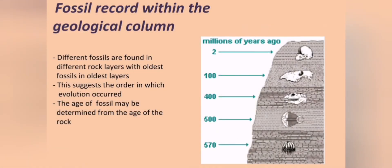If you take a plastic bottle, fill it up with some soil, pour some water into the bottle, put the lid on and shake it up, then let the bottle stand for a while, the muddy water inside is going to separate into specific layers. In the same way, if animals die inside a watery environment and get trapped in that muddy water, their bodies are trapped in various layers. The fossil record within the geological column shows that the oldest fossils are found in the oldest layers, suggesting the order in which evolution occurred — the most simple organisms are found deepest, with more recent fossils closer to the top.